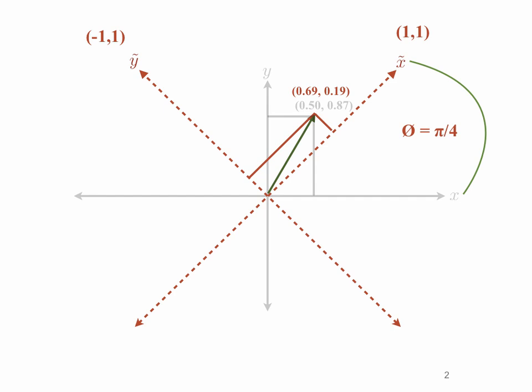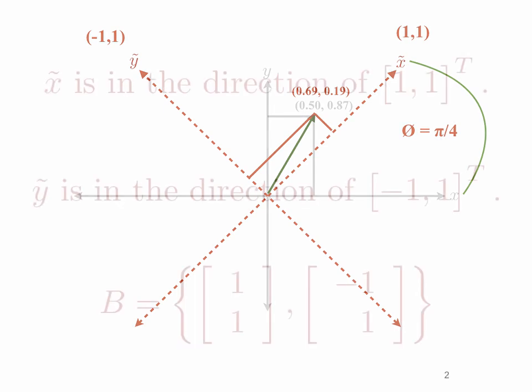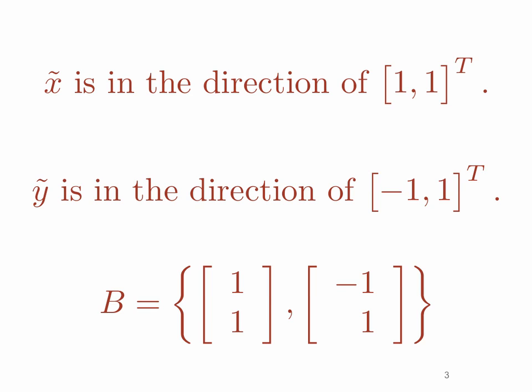We have seen that that vector has two different representations depending on whether we use the xy coordinate system or the x-tilde y-tilde coordinate system. So again, x-tilde is in the direction of the vector (1,1), and y-tilde is in the direction of (-1,1), and we can think of that as some basis b for R2, which has one vector (1,1) and the other one (-1,1).